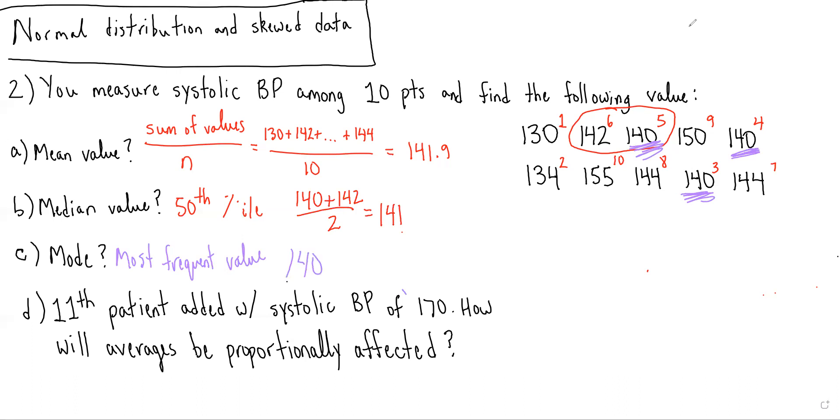For part D of the question, we're asked, if an 11th patient is added who has a systolic blood pressure of 170, how will the averages be proportionally affected?